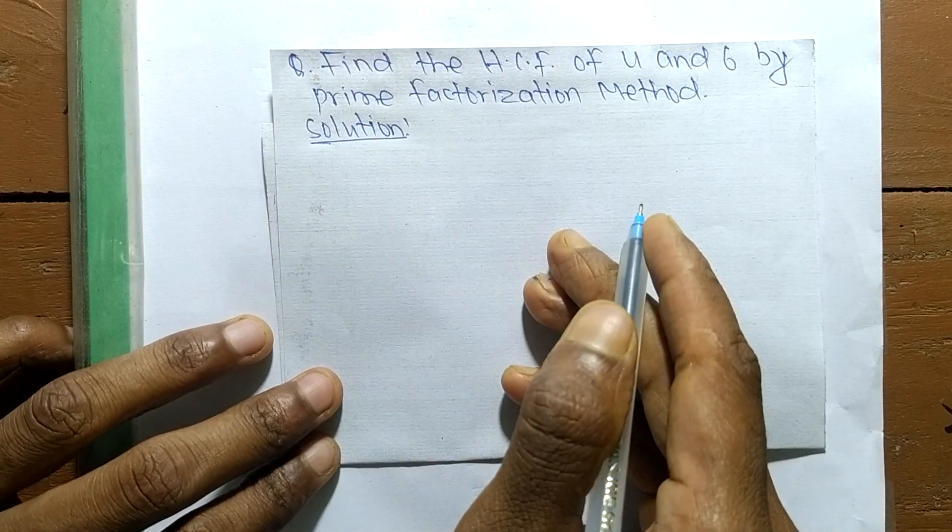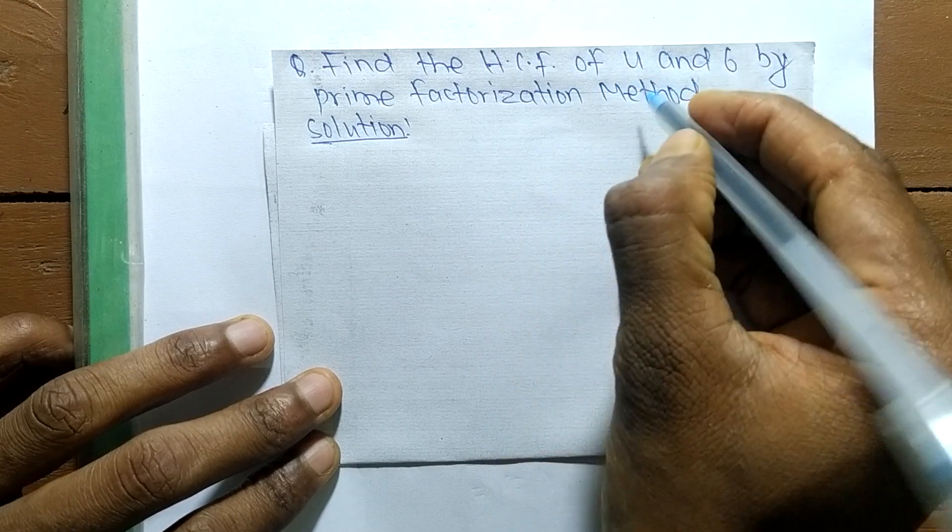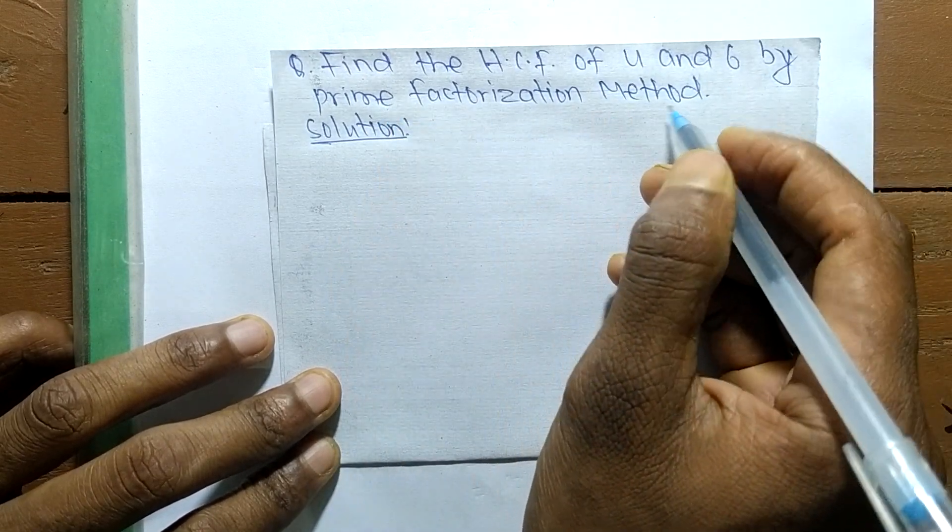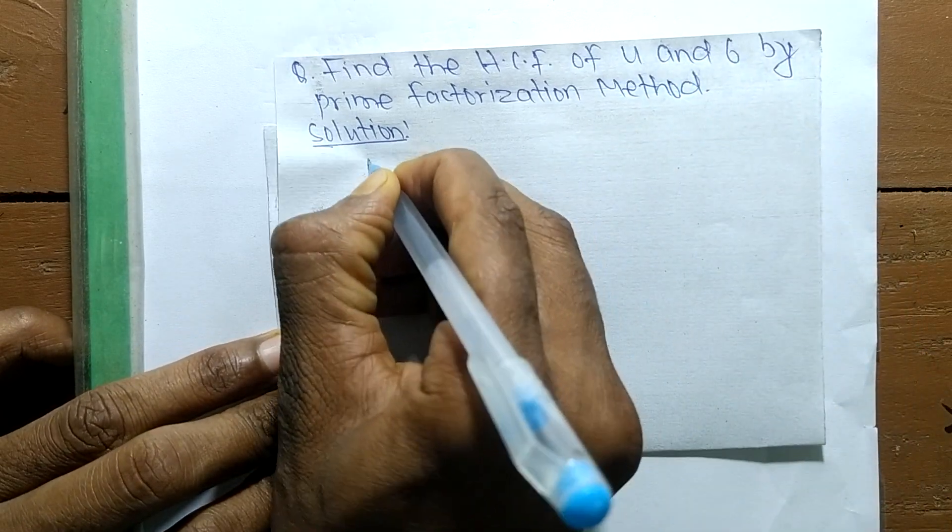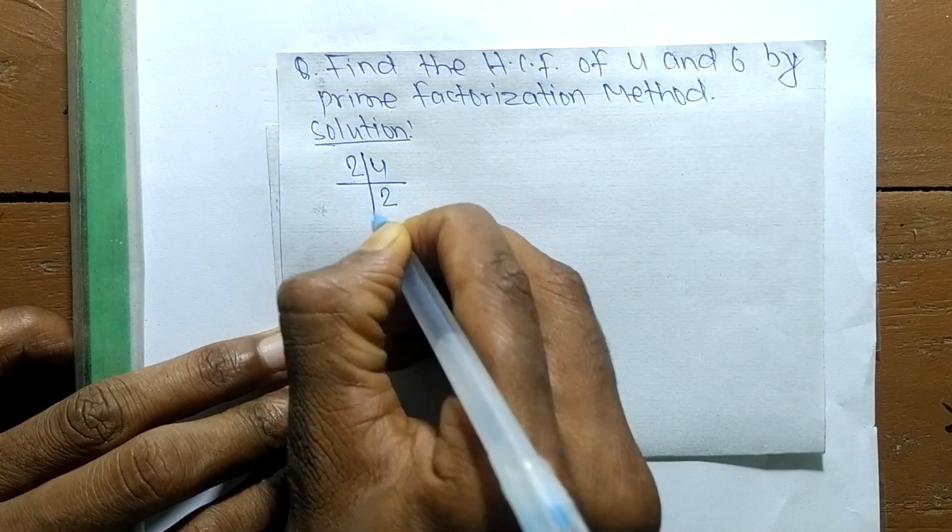Today in this video we shall learn to find the HCF of 4 and 6 by prime factorization method. First, we find out the prime factors of 4. It is 2 times 2 equals 4, and 2 times 1 equals 2.